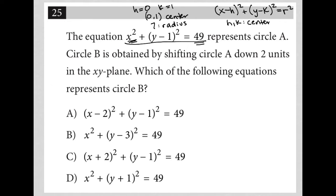Okay, so that just comes from understanding how to read that equation for a circle. The next sentence says circle B is obtained by shifting circle A down two units.